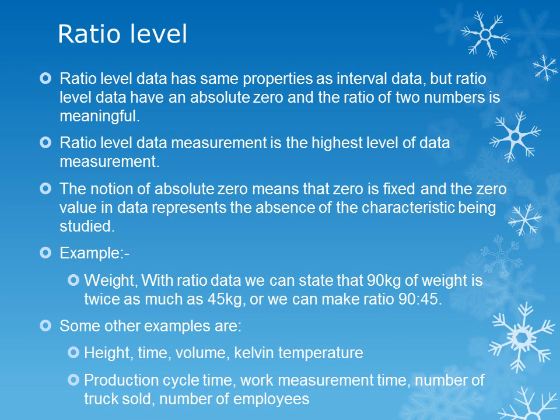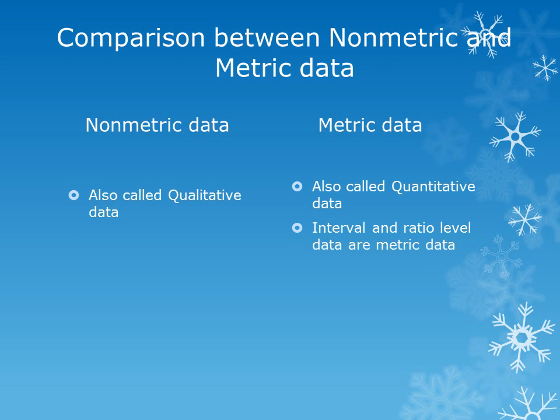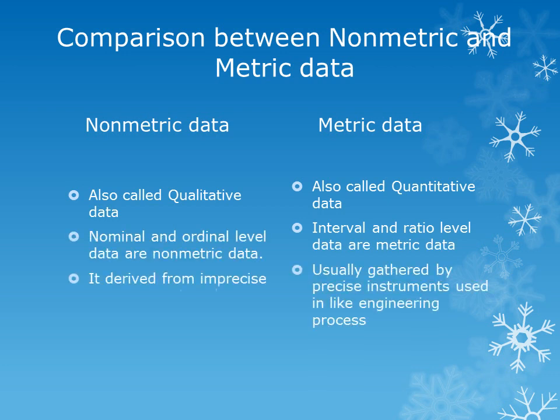Comparison between non-metric and metric data. Non-metric data is also called qualitative data, and metric data is also called quantitative data. Nominal and ordinal level data are non-metric data, while interval and ratio level data are metric data. Non-metric data are derived from imprecise measurements such as demographic questions, while metric data are usually gathered by precise instruments used in engineering processes.